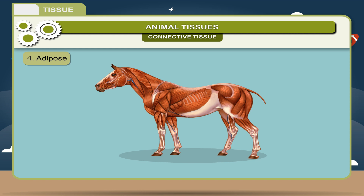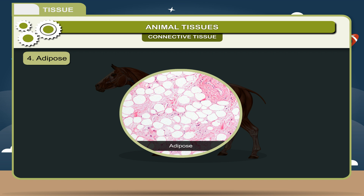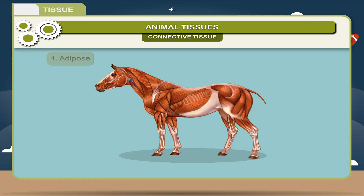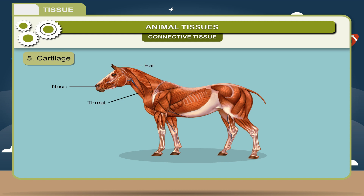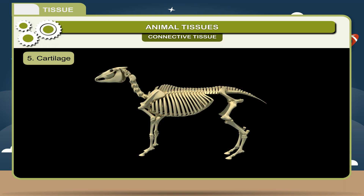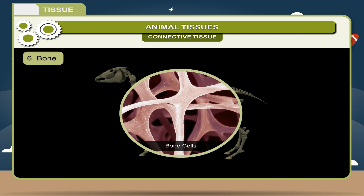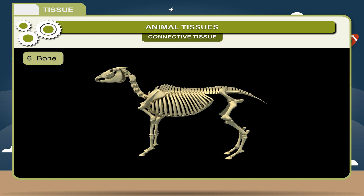4. Adipose — A fibrous tissue which contains a large number of cells filled with fats. This tissue acts as a shock absorber and also forms an insulating layer. 5. Cartilage — These are tough elastic tissues found in the nose, throat, ear, and other parts of the body, and form most of the skeleton in infancy. 6. Bone — It is a hard connective tissue and is the major part of vertebrate animals. It is composed of living tissue such as bone cells, fat cells, blood vessels, and non-living materials like water and minerals.